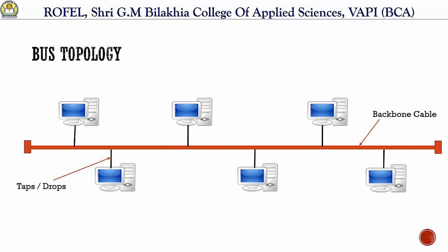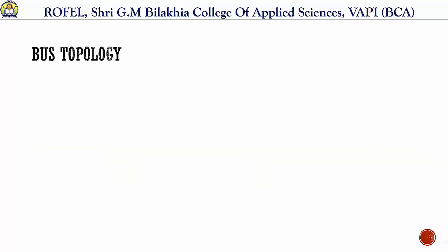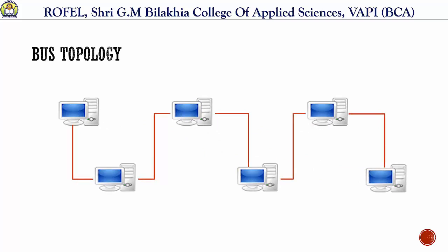As opposed to thick net Ethernet, another option is thin net Ethernet. Thin net drops the backbone idea and connects all devices directly. Thin net uses more flexible coaxial cable compared to thick net cable. In thick net, a major backbone cable was used, but in thin net that idea is dropped — instead of a thick net backbone cable, we can use a direct link from PC to PC.